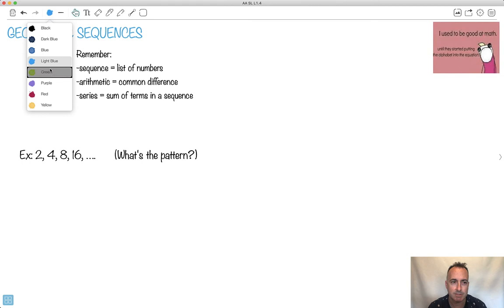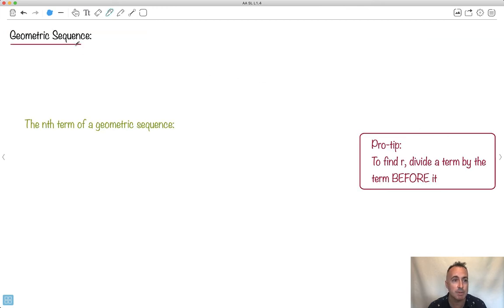Do you notice that the pattern here seems to be you don't add the same number, do you? In this case, you multiply. In this case here you would multiply by how much? Multiply by 2 in this case. That would be the pattern. So whereas arithmetic is adding the same number, here we're gonna multiply by the same number. That's what's gonna characterize a geometric sequence.